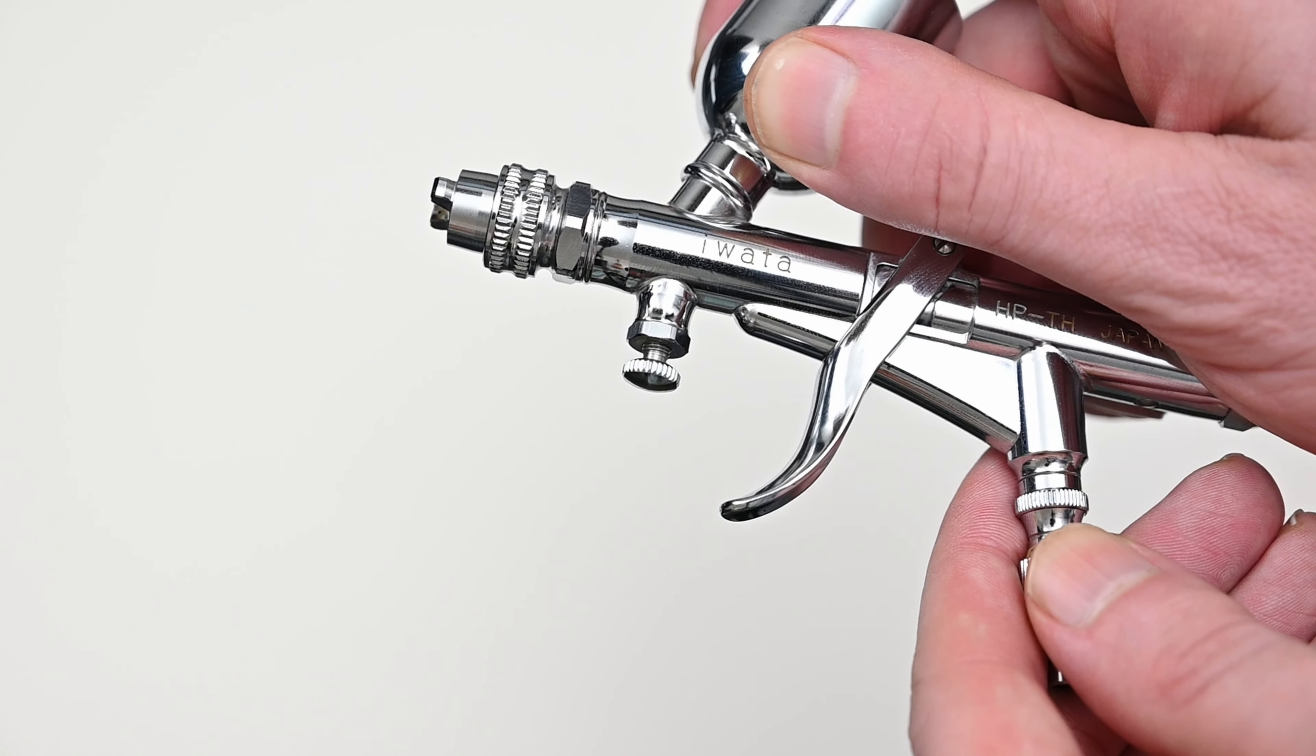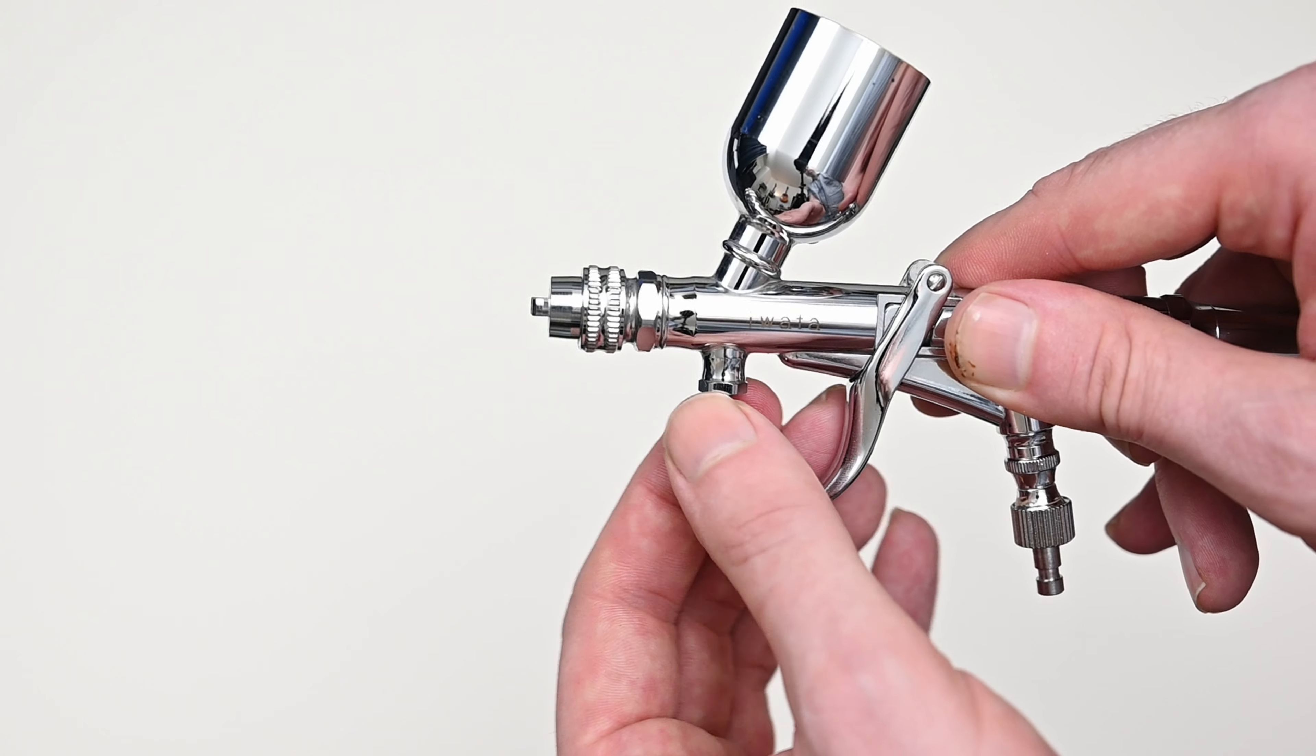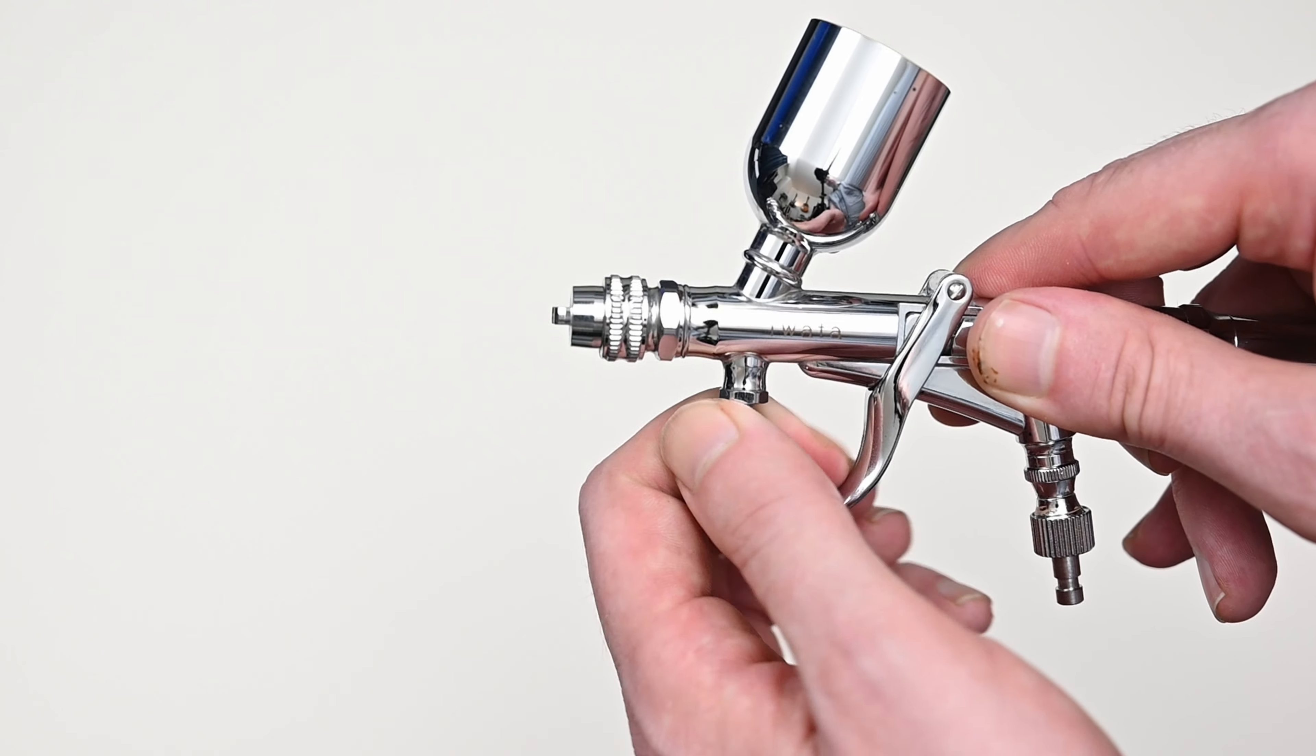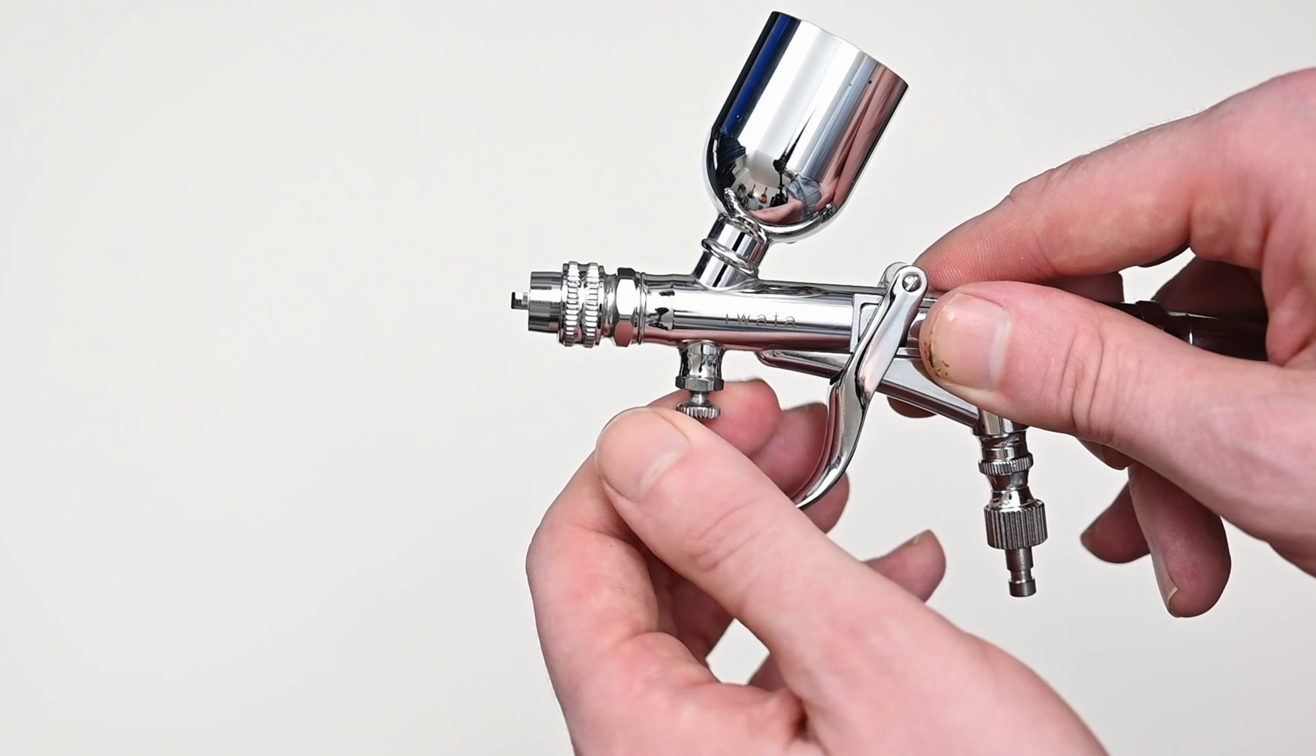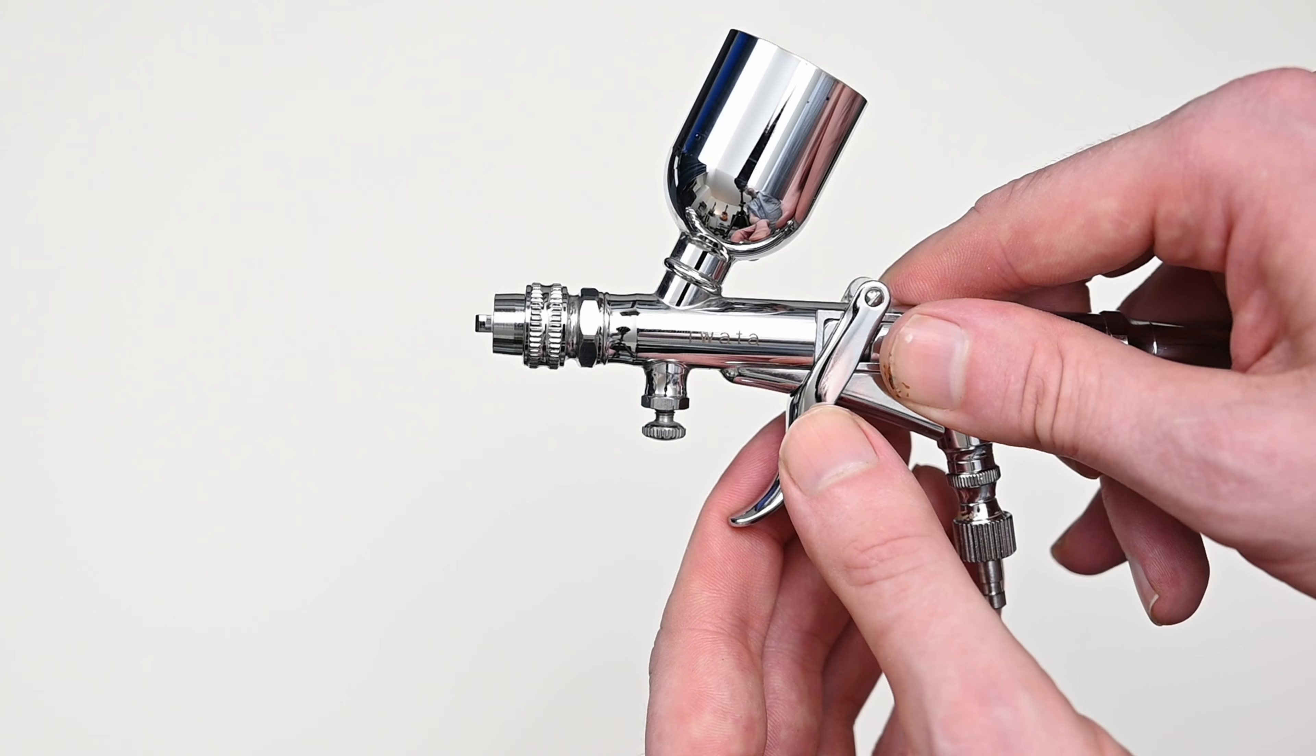On the front here the airbrush is equipped with a MAC valve which is an acronym for micro air control. The purpose of this valve is to control the airflow to the nozzle. If I tighten this down it causes less air to flow from the valve to the nozzle. So you could tighten this down to get some stippling effects or you could just adjust it on the fly without having to go over to your compressor.